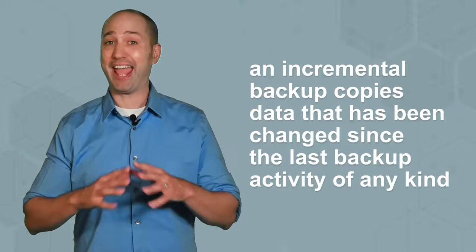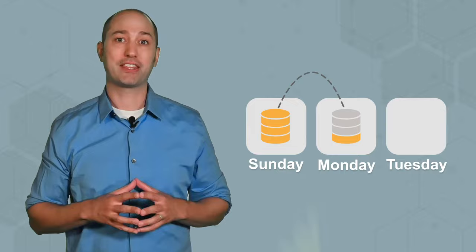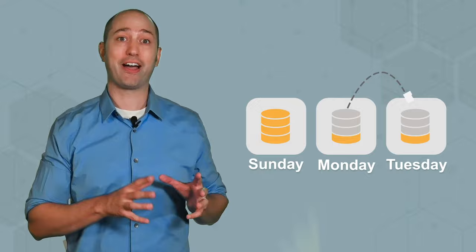An incremental backup copies all the data that's been changed since the last backup activity of any kind. Like differential, incremental first starts with a full backup. Unlike differential, incremental will only copy data changed since the last incremental backup. So if a full backup was performed on Sunday, Monday's incremental backup would only copy anything changed since Sunday's full backup. But Tuesday's incremental will only backup files changed since Monday's incremental backup, and so on.